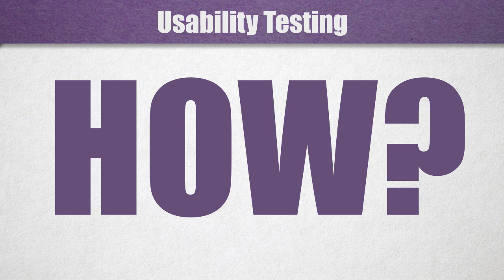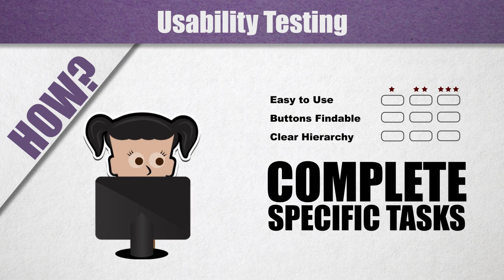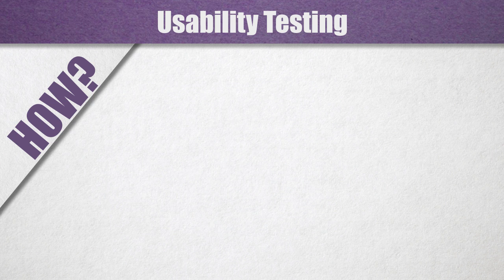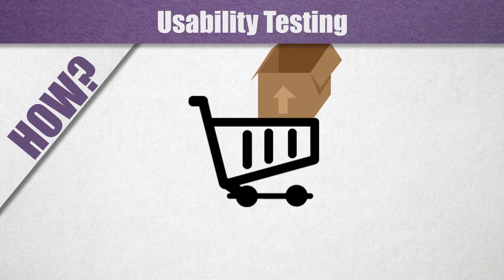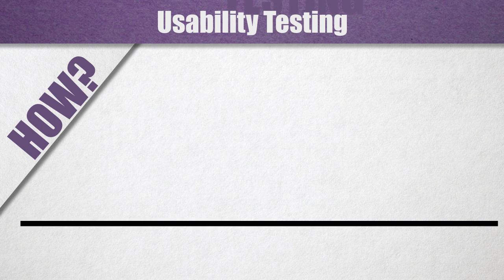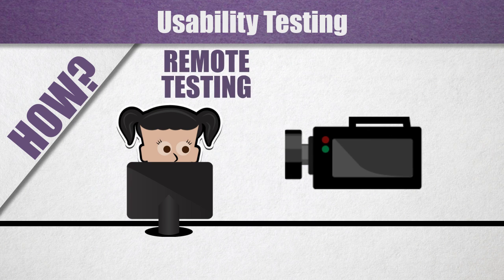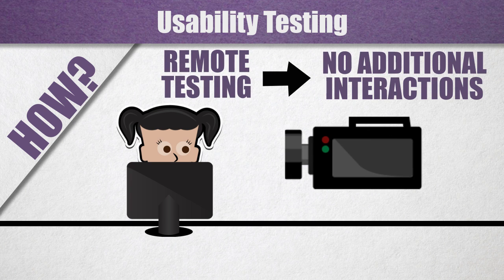How do you do usability testing? Usability testing asks users to complete specific tasks. For instance, they may need to add products to an online shopping cart and complete the checkout process. In-person testing is preferable because it allows you to ask the facilitator questions to gather additional information about the user's experiences. While remote testing can be done, it doesn't allow for additional interactions.